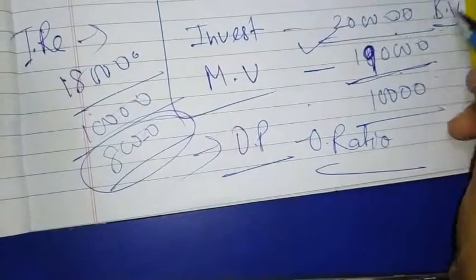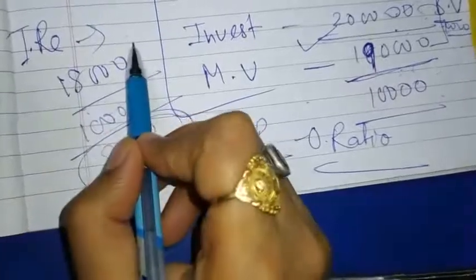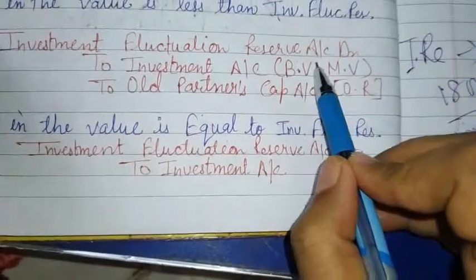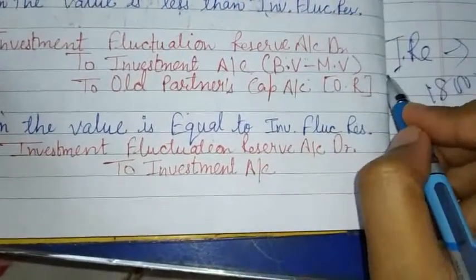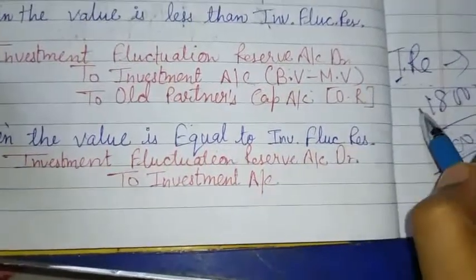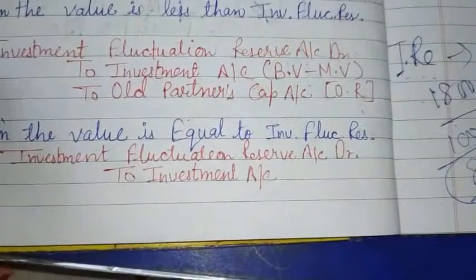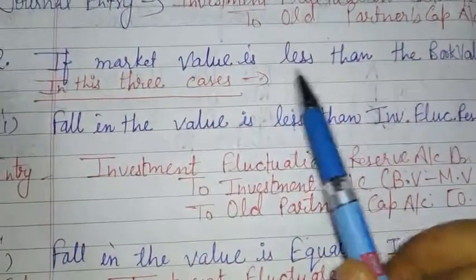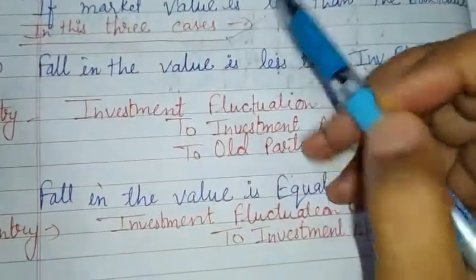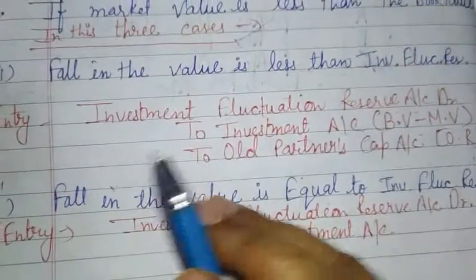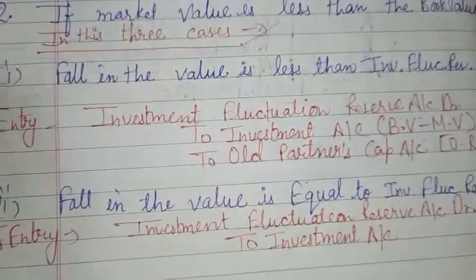So the difference between book value and market value is 10,000. This 10,000 will be written off from the Investment Fluctuation Reserve Account. The Investment Fluctuation Reserve Account is debited with 18,000 - of which 10,000 is written off against the investment and the remaining balance of 8,000 is distributed to old partners' capital accounts in their old profit sharing ratio.